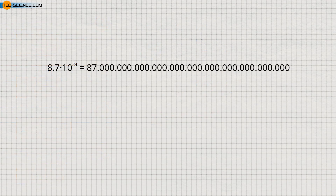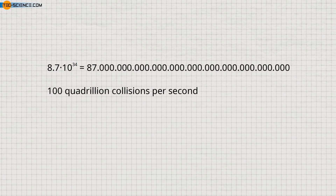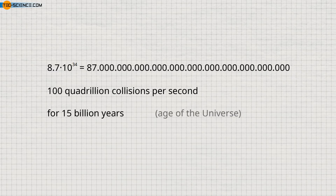To better illustrate this unimaginably large number, here is a small example. If 100 quadrillion collisions would take place within one second, then still another 15 billion years would have to pass in order to obtain this total number of collisions. 15 billion years correspond, by the way, to the age of our universe.